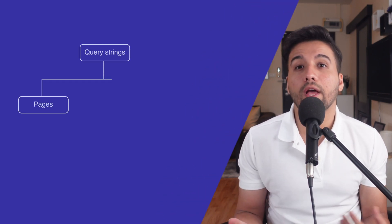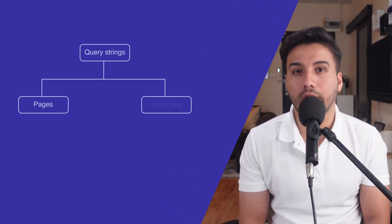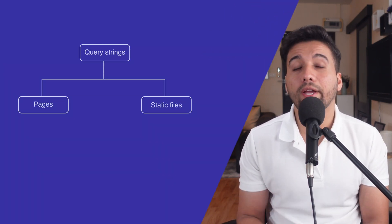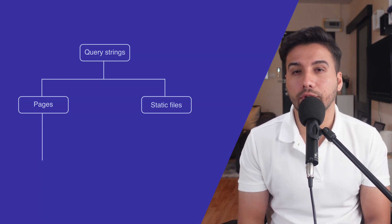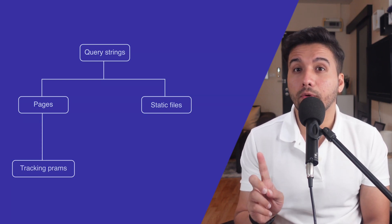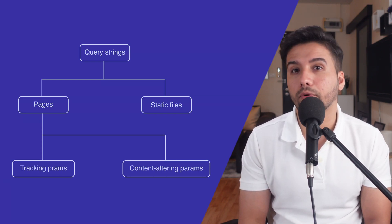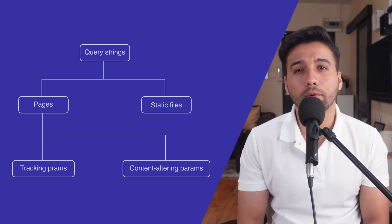Now there are two main types of query strings: those on pages and those on static files. On pages, there are two main types: tracking parameters and content-altering parameters. Tracking parameters are used for analytics and marketing purposes and don't change the content of the page.